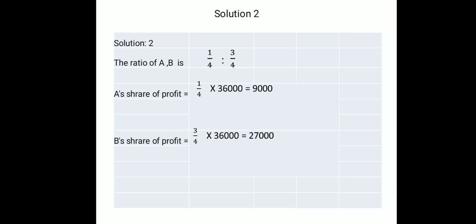B received rupees 350 more than C. Find A's share and also find the profit-sharing ratio of A, B, and C. A is dependent on B, and B is dependent on C. C is independent. So you take C as the base variable.